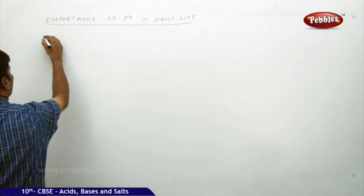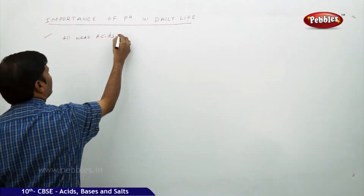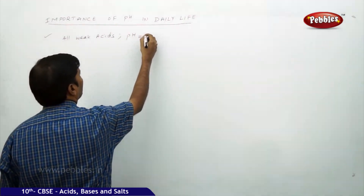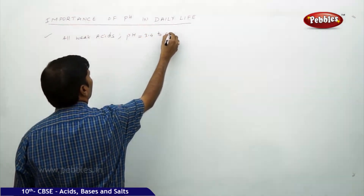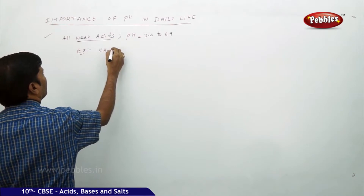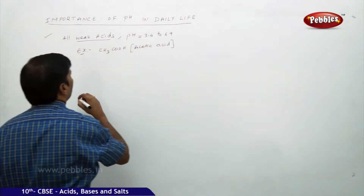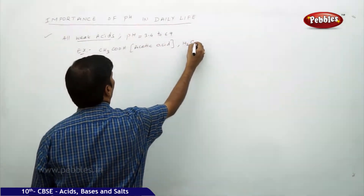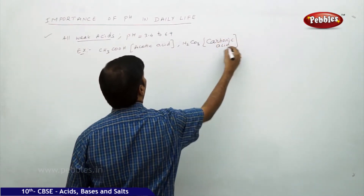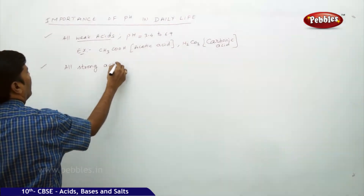For all weak acids, the pH is equal to 3.4 to 6.9. Examples of weak acids include acetic acid (CH3COOH) and carbonic acid (H2CO3).